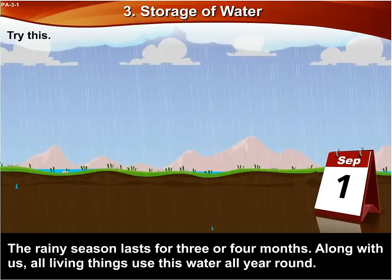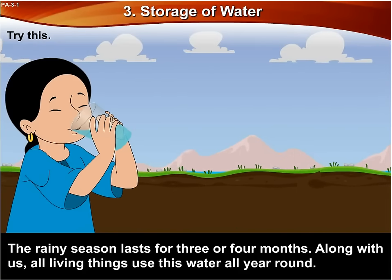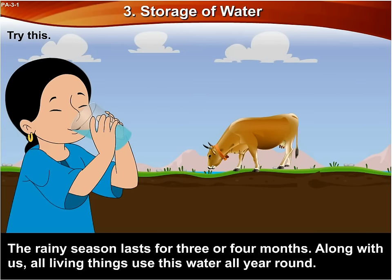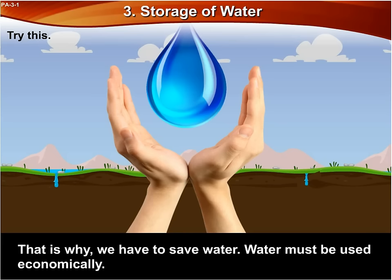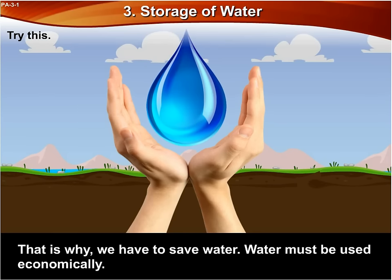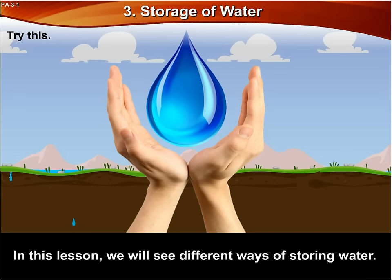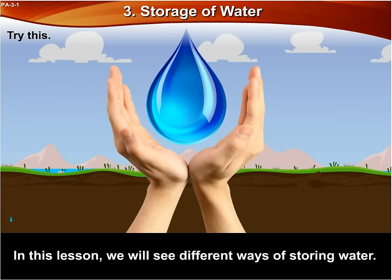All the water we get comes from the rain. The rainy season lasts for three or four months. Along with us, all living things use this water all year round. If we do not store water, we will not have enough water for our needs. That is why we have to save water. Water must be used economically. In this lesson, we will see different ways of storing water.